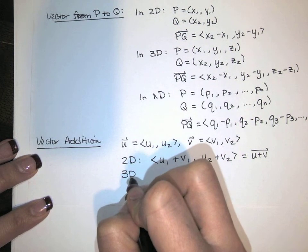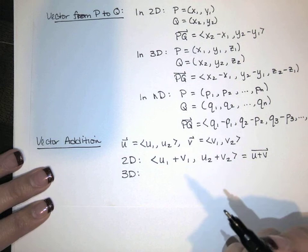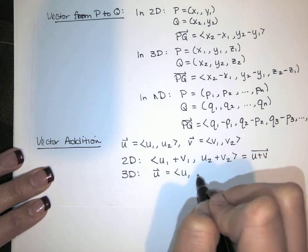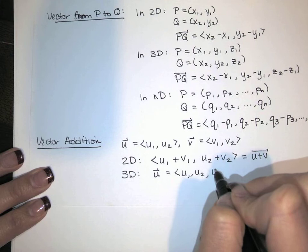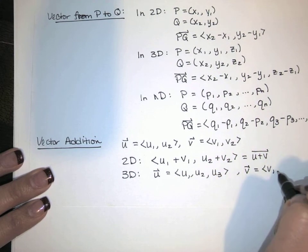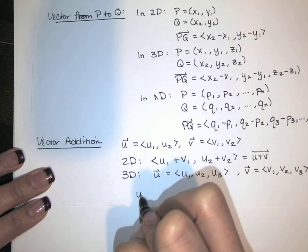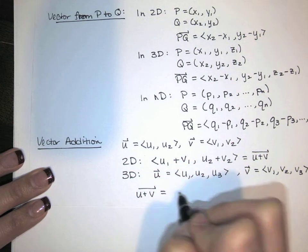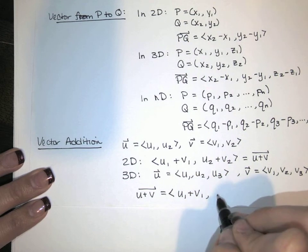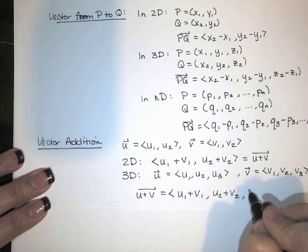In 3D, well now my u and v have to have three components. U will have components u1, u2, and u3, because I'm in 3D. And v will have components v1, v2, and v3. And then u plus v will have three components, too. Add the x components together. Add the y components together. And finally, we add the z components together.